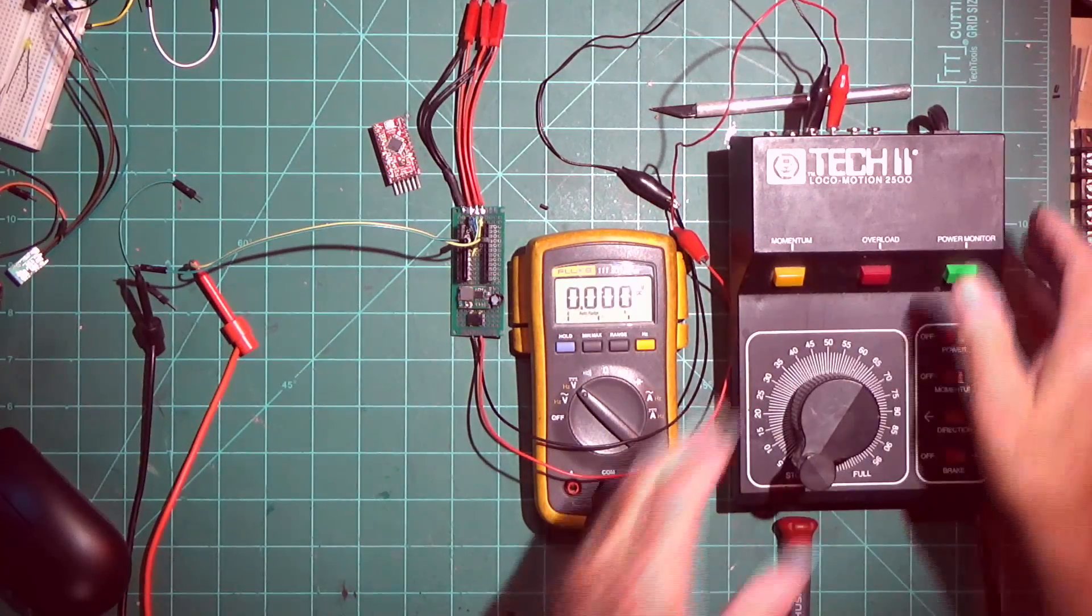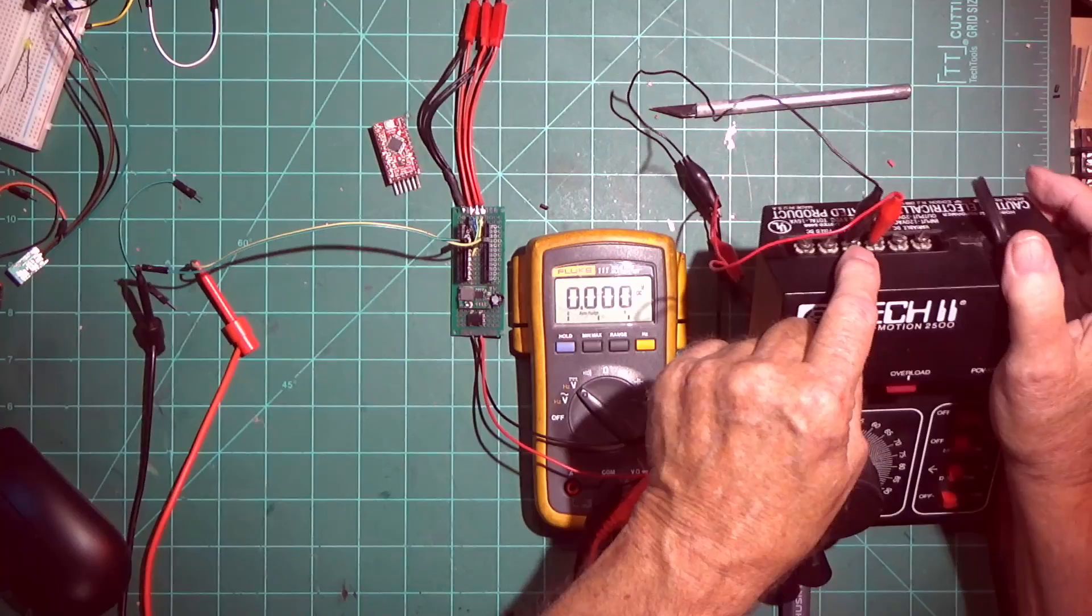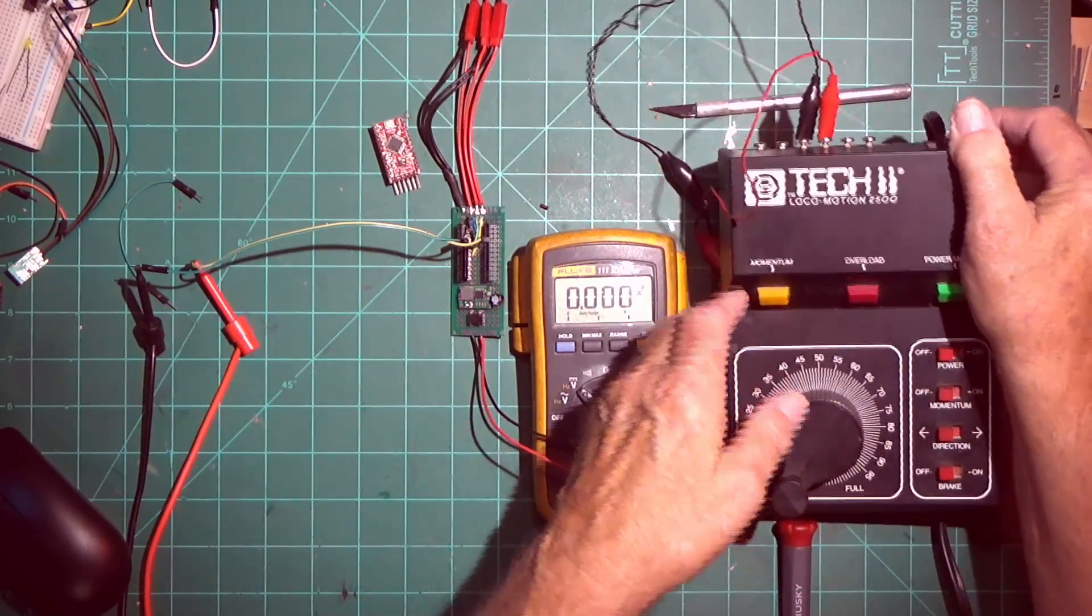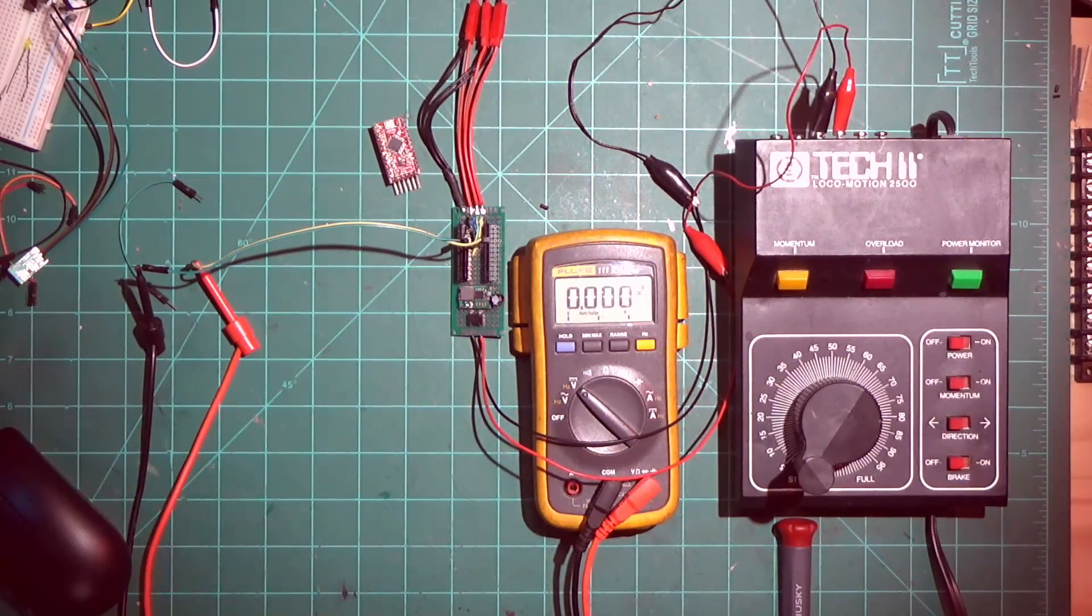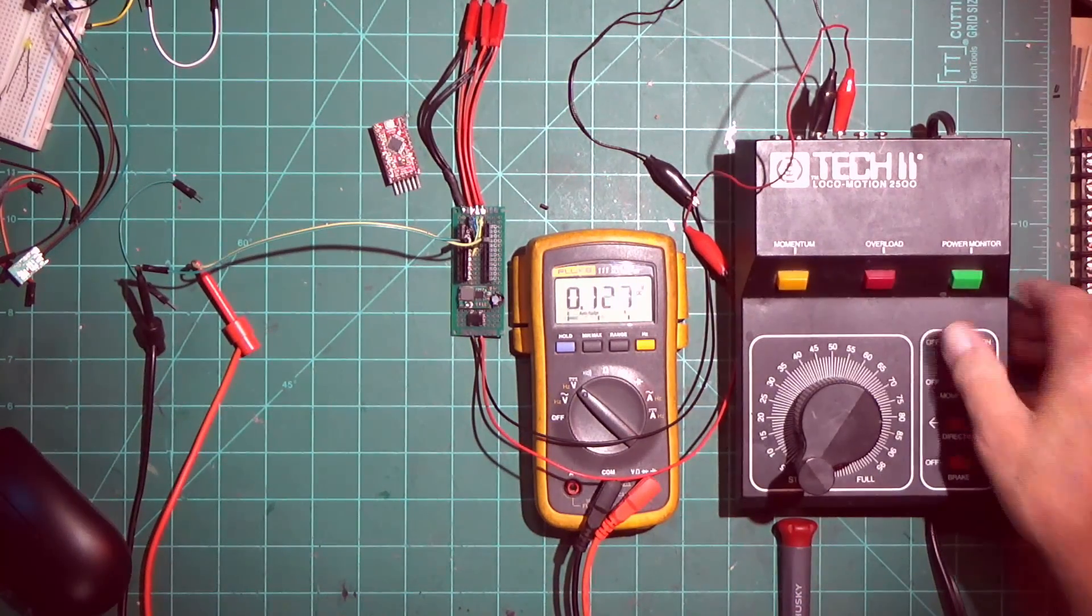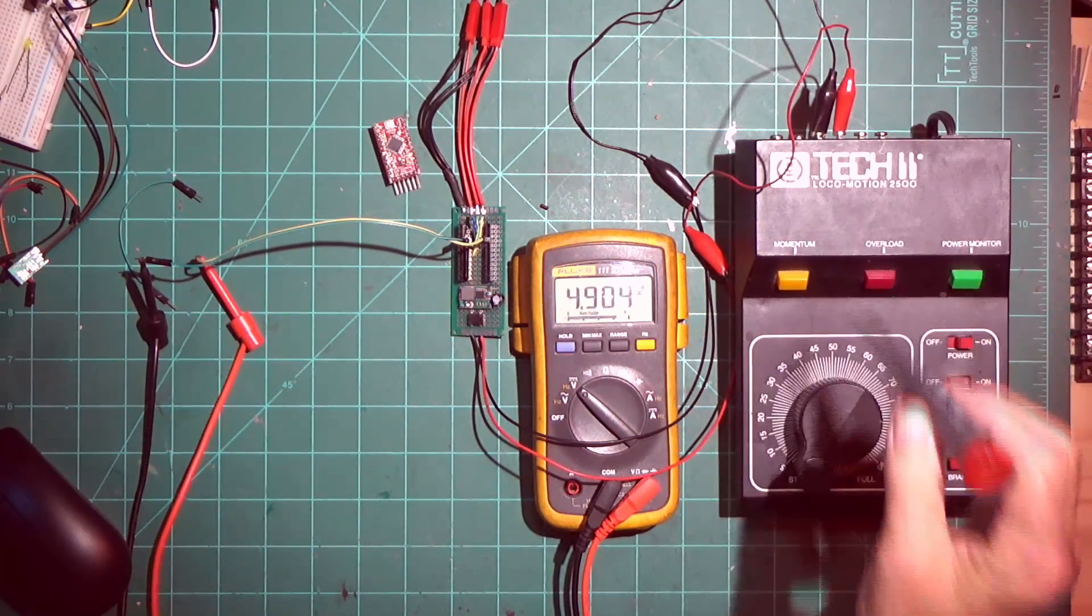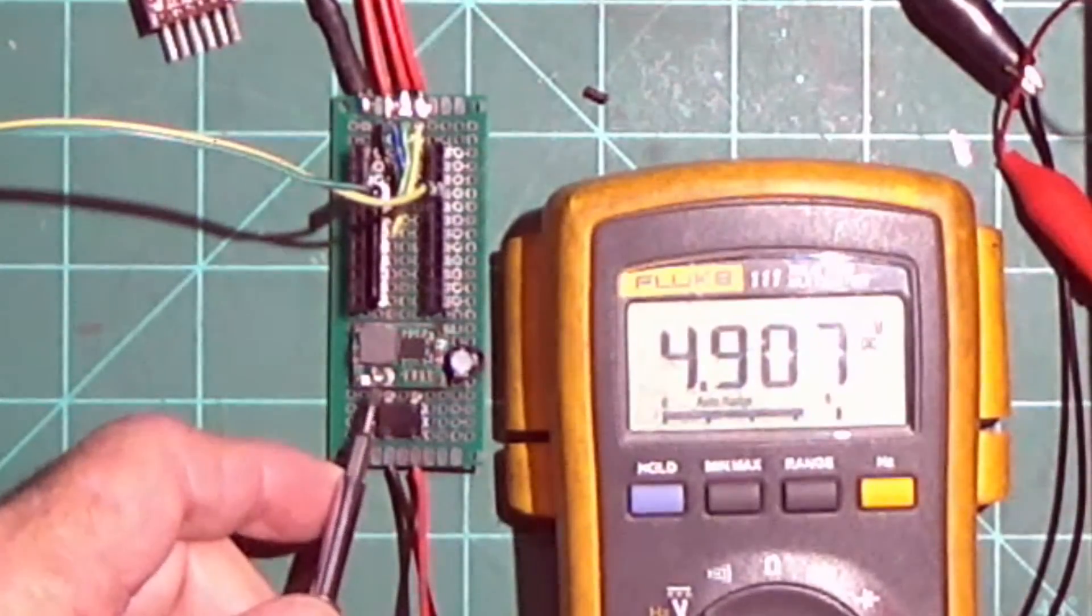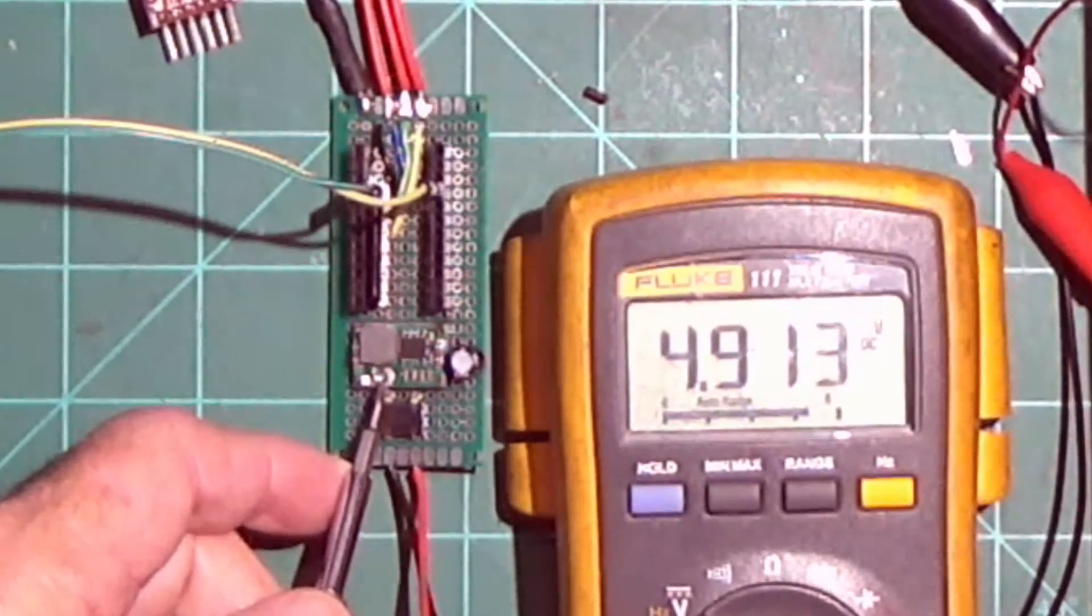I now have it hooked up to a Tech 2 transformer. As you can see on the back, I have it on the AC terminals marked for accessories. Let me turn the power on and I come up with about 4.9 volts. Your voltage can be adjusted on this screw right here which is very sensitive. I'm not going to do it right now because it's close enough.